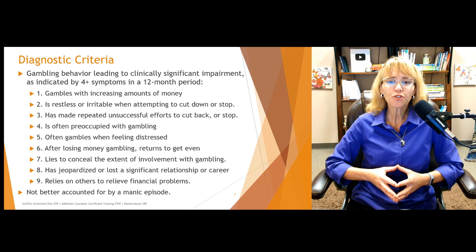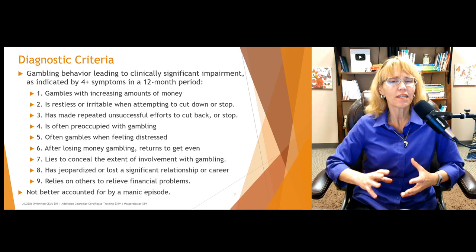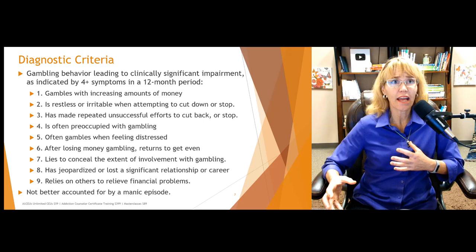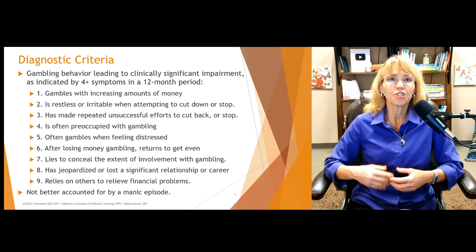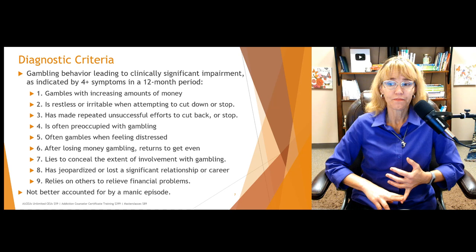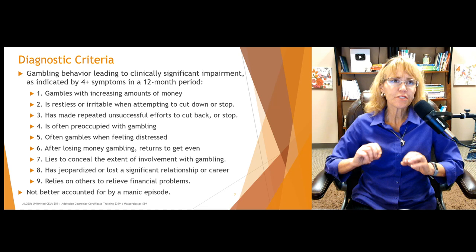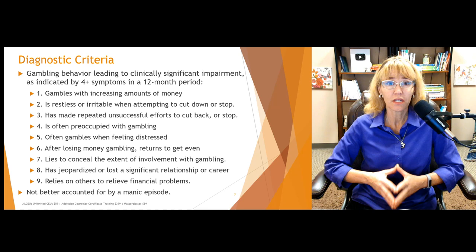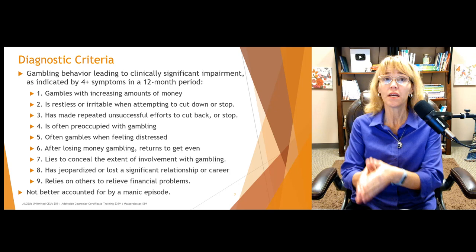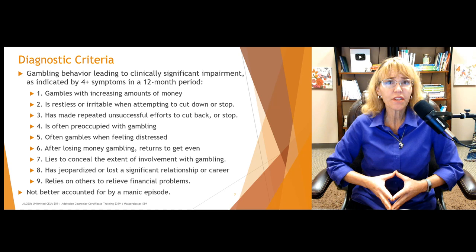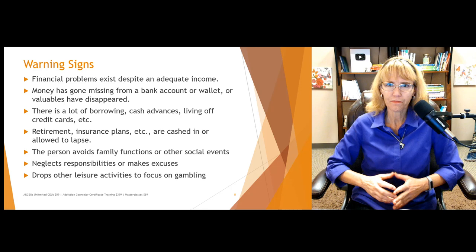Additional criteria include: often gambling when feeling distressed; returning after losing money to try to get even — akin to the hair of the dog; lying to conceal the extent of involvement with gambling; jeopardizing or losing a significant relationship or career as a result of gambling; and relying on others to relieve financial problems. It's important that this is not better accounted for by a manic or hypomanic episode. Of these nine diagnostic criteria, the person only needs to meet four in a 12-month period.